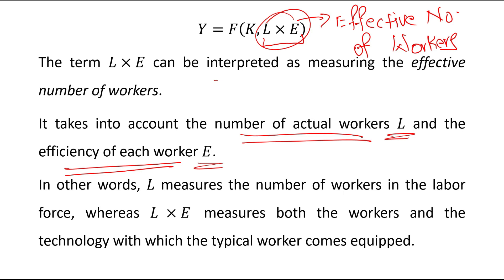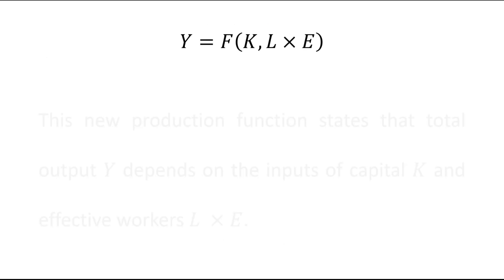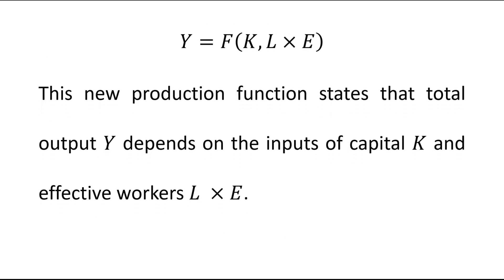In other words, L measures the number of workers in the labor force, whereas L times E measures both the workers and the technology with which the typical worker comes equipped. This new production function states that total output Y depends on the inputs of capital K and effective workers L times E.